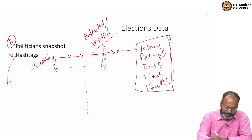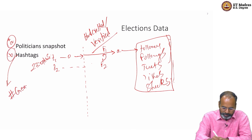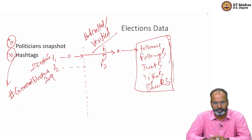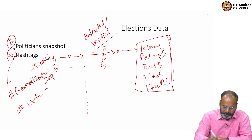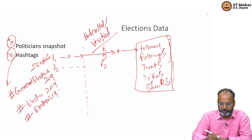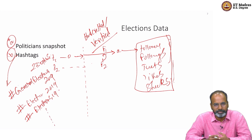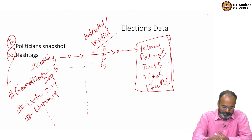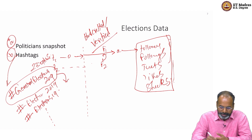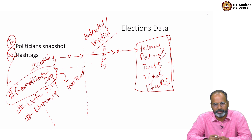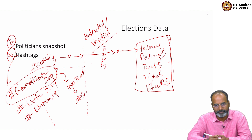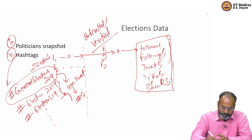The other set of data we collected was hashtags related to the general elections. The official hashtag used for the 2019 elections was 'general elections 2019', but there were lots of other hashtags too. We collected all of these hashtags. We did something smart — we looked at tweets with these hashtags first, then looked at what other hashtags appeared in those tweets and added them back to our data collection.